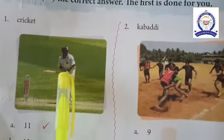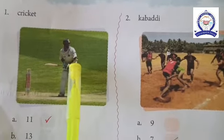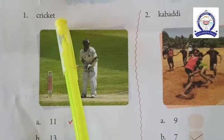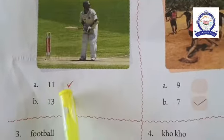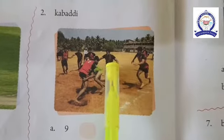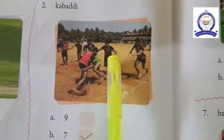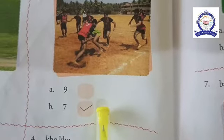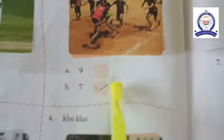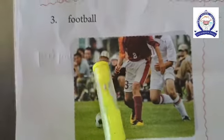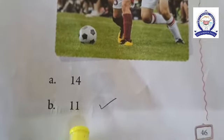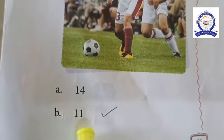The first one is cricket — there are 11 members in cricket. The second one is Kabaddi — there are 7 members in Kabaddi. The third one is football — the answer is 11 members in football.